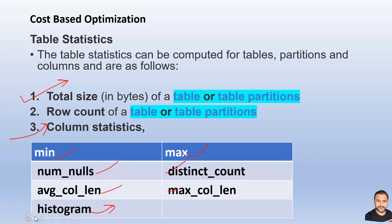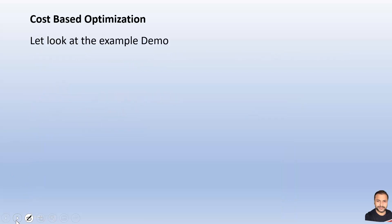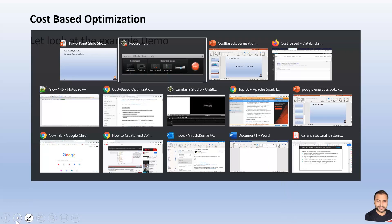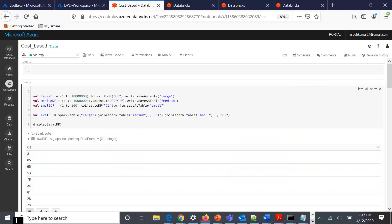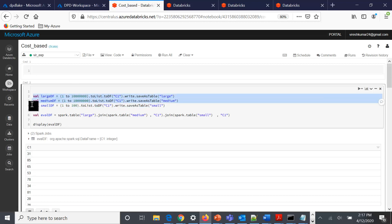All these statistics are calculated and based on this, the cost model takes a decision to rearrange the physical plan to get the maximum optimized outputs. Let's try to look at the demo for this. In this particular example, we have taken three data frames. Two of the data frames are of large nature so that when we try to join them it should result in some sort of a sort-merge join, and then one small dataframe so that will result in the broadcast join because by default it is enabled.